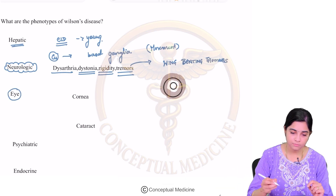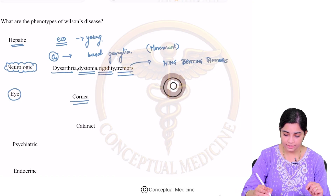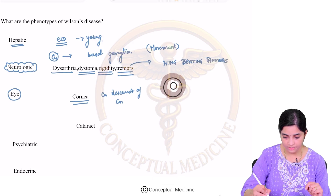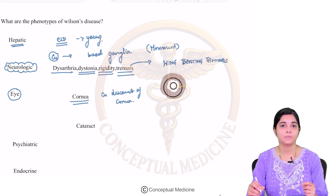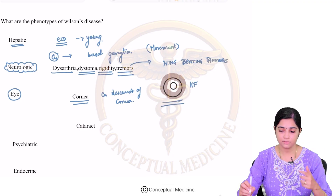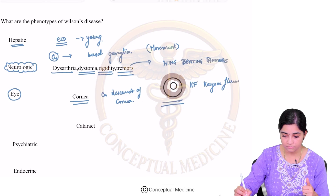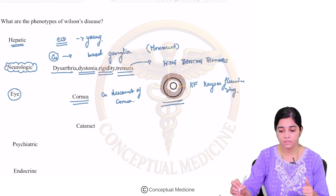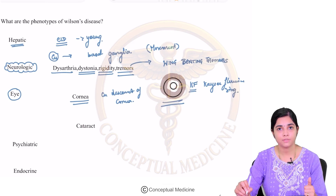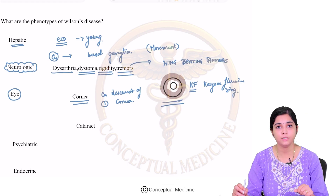Let us look at the ophthalmologic manifestations of Wilson's disease. In the eye, first we will look at the cornea. There can be deposition of copper in the Descemet's membrane of the cornea, and this results in a ring-like appearance around the limbus of the cornea which is called the KF ring or the Kayser-Fleischer ring. The KF ring is deposited in the Descemet's layer of the cornea.